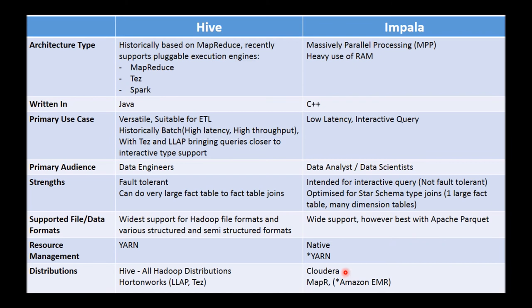Impala, being an innovation of Cloudera, is primarily geared towards deployment within Cloudera's distribution of Hadoop. It is an Apache project, so you can install it on any distribution, but the mechanics of deploying and configuring it are much easier with Cloudera. Interestingly, MapR, another Hadoop distributor, also supports Impala.